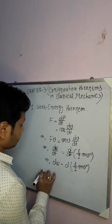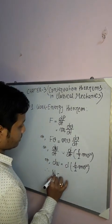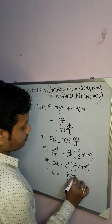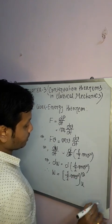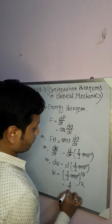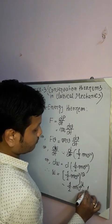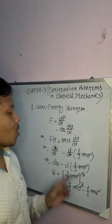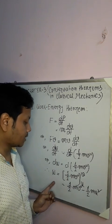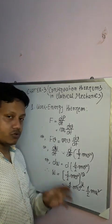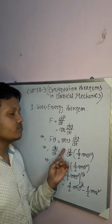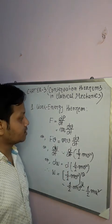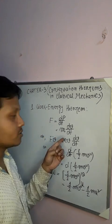Now if we integrate this expression, integrating from initial velocity u to final velocity v, we get ½mv² minus ½mu². This is basically the work-energy conservation theorem: the work done must be equal to the change in kinetic energy.